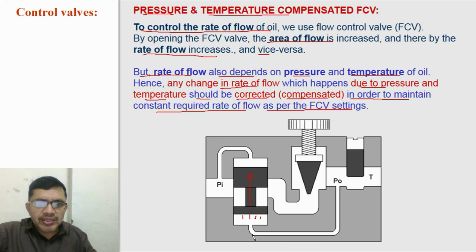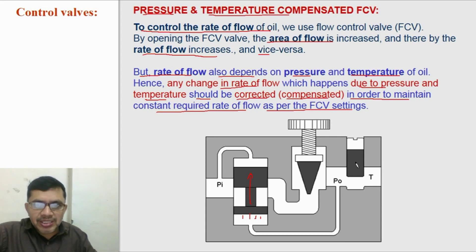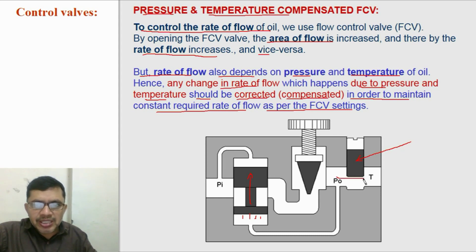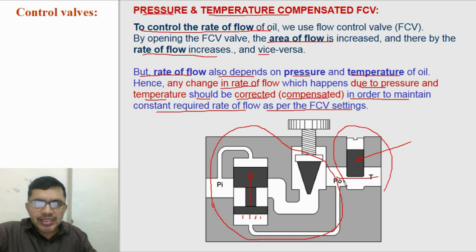And if pressure at the outlet is reduced, then naturally pressure at inlet will be more and the spool will move in the downward direction so that the flow rate will be reduced and we will get a constant rate of flow accordingly. In the same way, if temperature of oil is more, then viscosity of oil will reduce because of which flow rate will increase. To compensate this, there is a temperature sensing element with high thermal expansion. It expands and closes this passage slightly, due to which the rate of flow will reduce. So this is the pressure compensation mechanism and this is the temperature compensation mechanism.